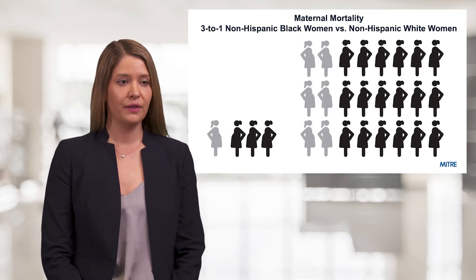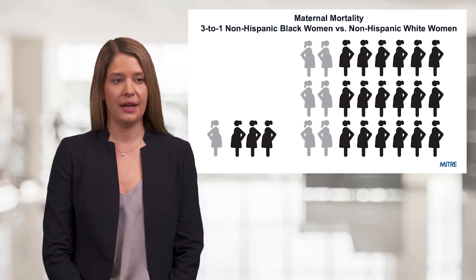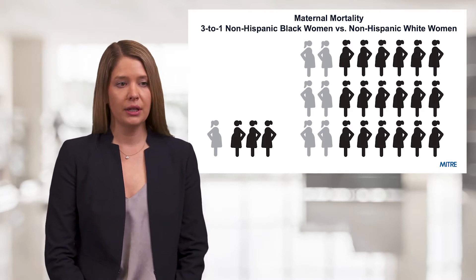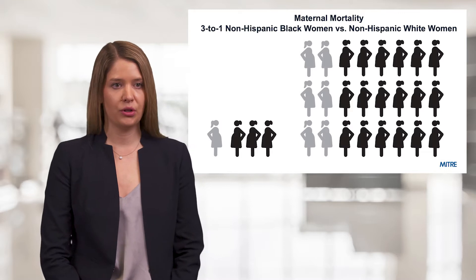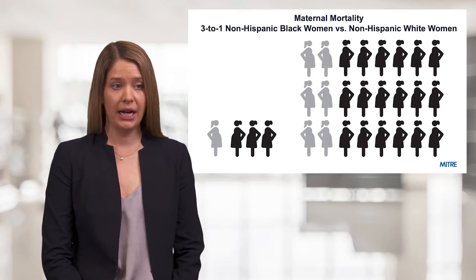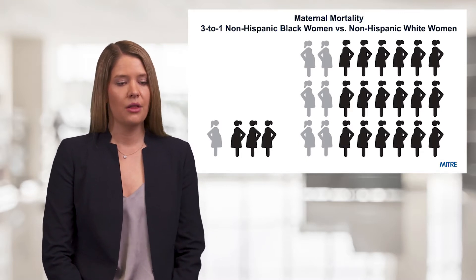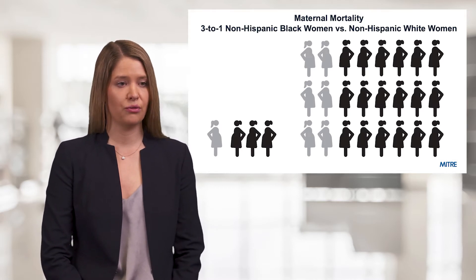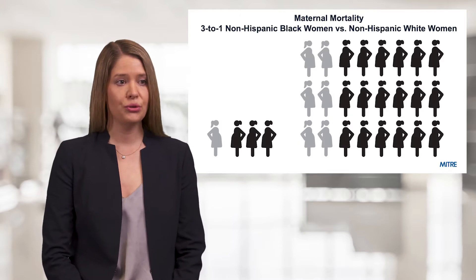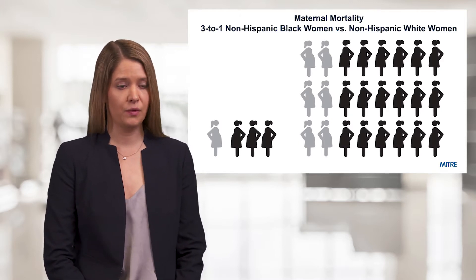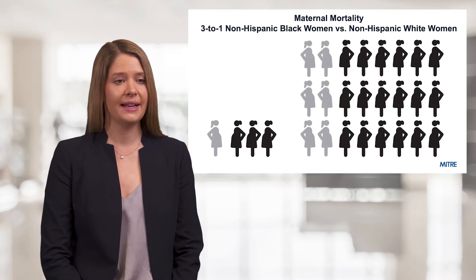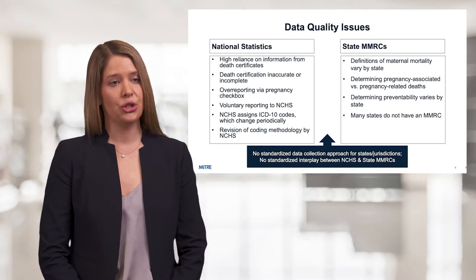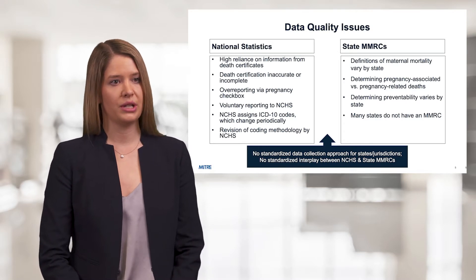There are a number of interventions currently in place in the US to try to reduce these racial and ethnic disparities. Currently, medical schools and different hospitals are introducing implicit bias trainings within their facilities. There are also a number of bills currently on the Hill to try to address some of these racial inequities. It's too soon to truly know if these interventions will be successful, but the maternal health community is hopeful that they will have some impact.